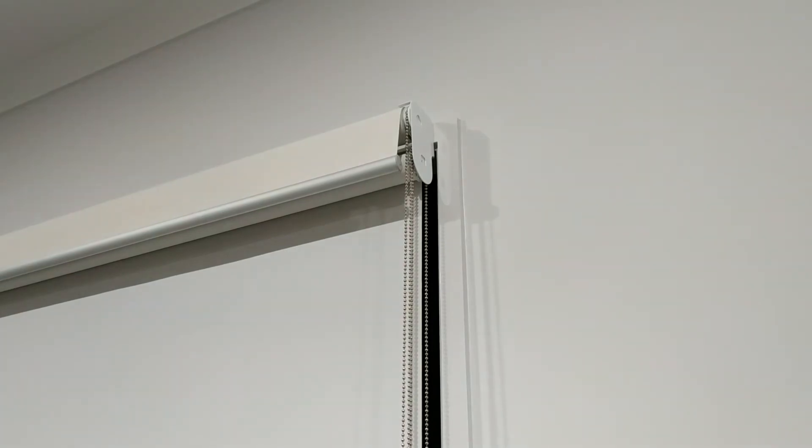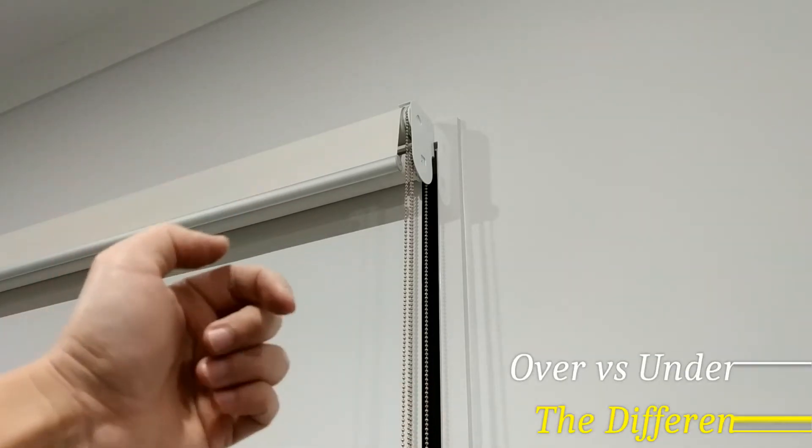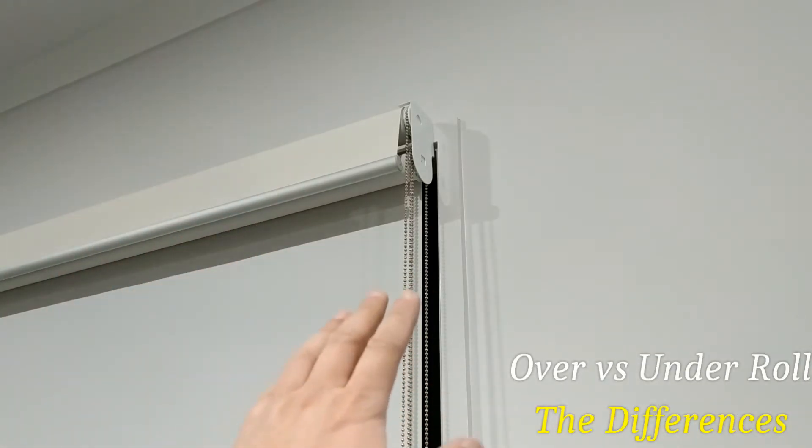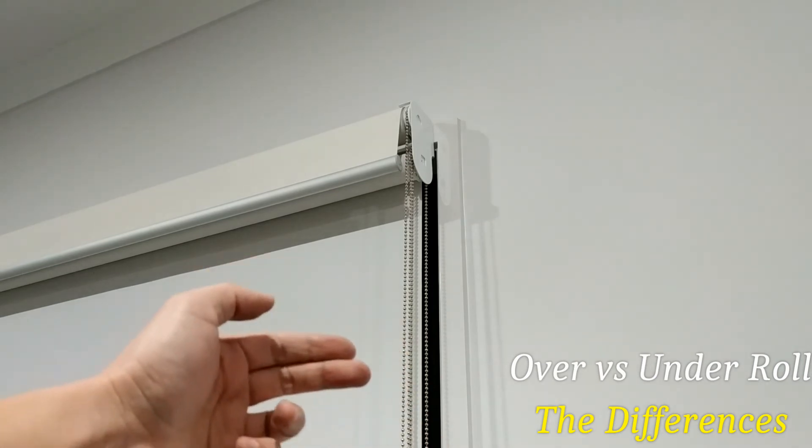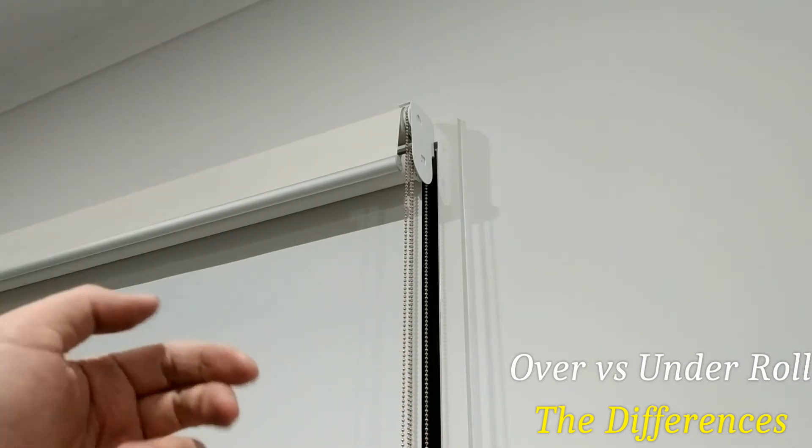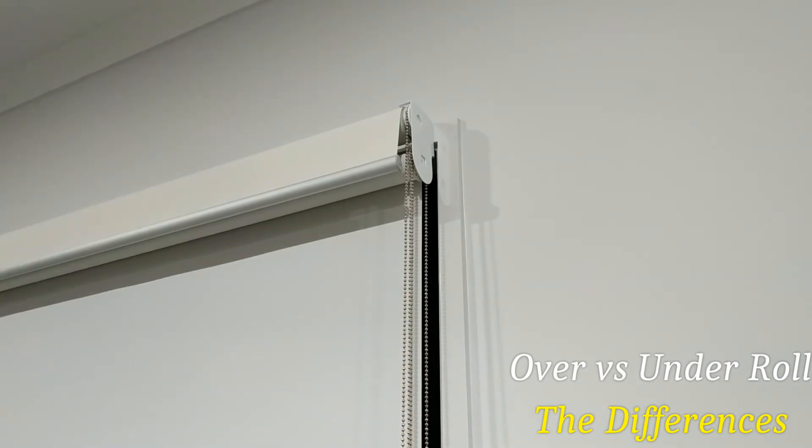So the other consideration you would have is whether the blinds roll over or roll under. The one behind is rolling under, the one in front is rolling over. So this is pretty much a matter of preference, whether you like it over or under.